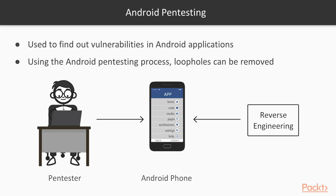If you want to know whether your application is actually secure or not, after development of any Android application it is necessary to perform penetration testing. If you directly deploy the application it can be harmful for the client. So before deploying, perform penetration testing, create a report, find vulnerabilities, remove and patch them, and then finally deploy. This is the process of Android penetration testing.